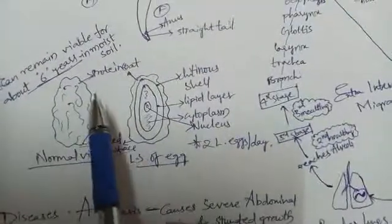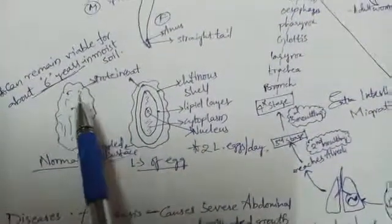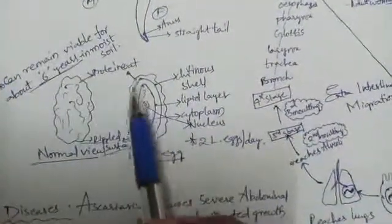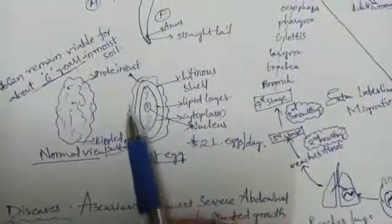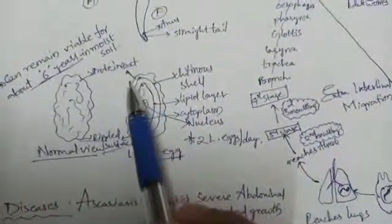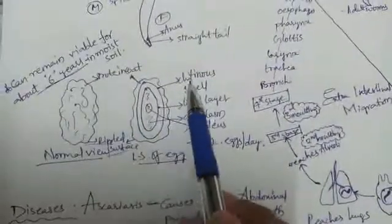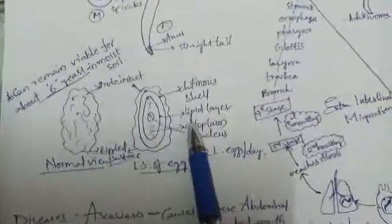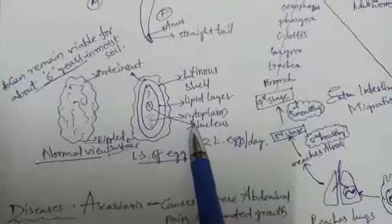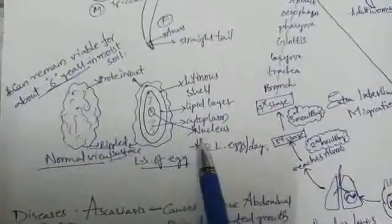You can see here the outer layer is the protein coat. The chitinous shell is followed by it, then the lipid layer, cytoplasm, and the nucleus.